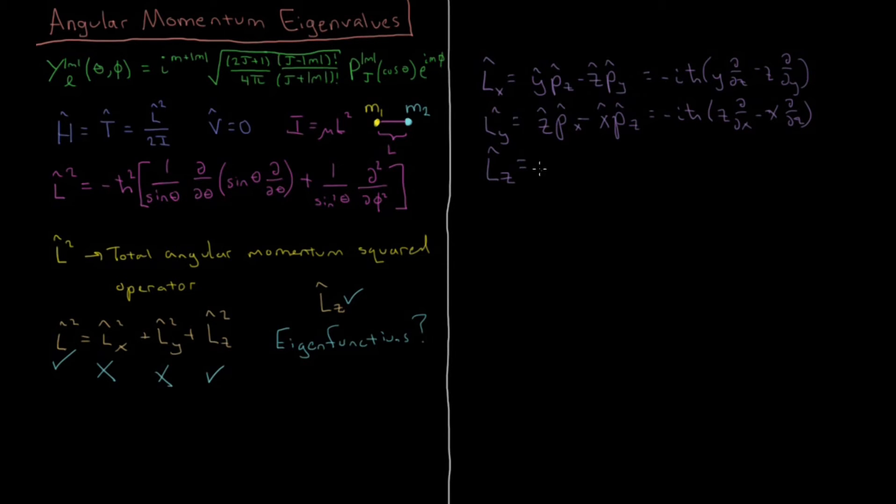Then the one we're interested in, the Lz operator is X Py minus Y Px, which is minus IH bar, X partial with respect to Y minus Y partial with respect to X.